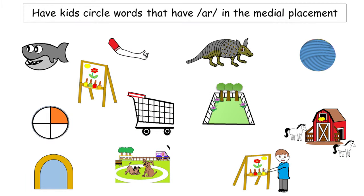As a review, in this activity have kids circle words that have A-R in the medial placement. There are two additional words represented by pictures: yarn and yard. Before kids begin, go over each picture saying the word it represents: shark, arm, armadillo, yarn, art, park, cart, yard, and farm. Then farm, arch, park, and artist.